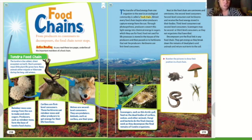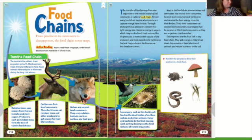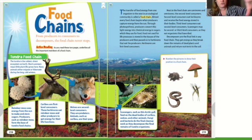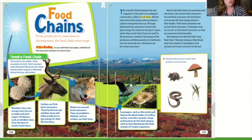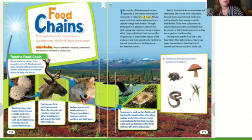It says: number the pictures to show their position in a food chain. The sun comes first — where does the sun send its energy? What gets the sun's energy first in those pictures? There's a mouse, a mushroom, a snake, and what looks like wheat — which is a type of plant. So the sun's energy goes to the wheat first.